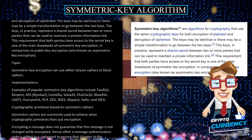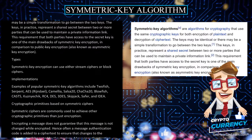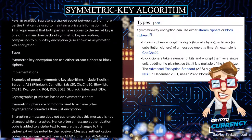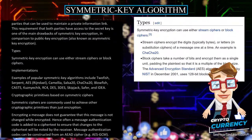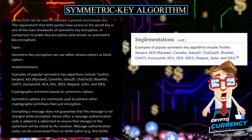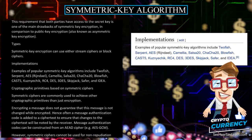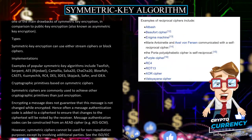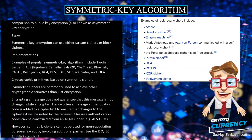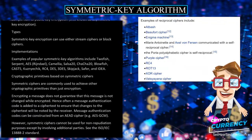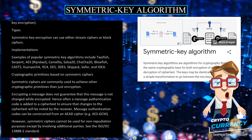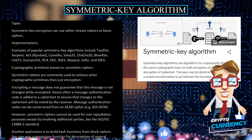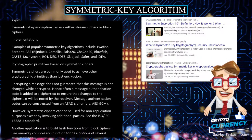Types: Symmetric key encryption can use either stream ciphers or block ciphers. Implementations: Examples of popular symmetric key algorithms include 2Fish, Serpent, Ice, Rigendale, Camellia, Salsa20, ChaCha20, Blowfish, Cast5, Kuznjic, RC4, Day, 3Day, Skipjack, Safer, and Idea.